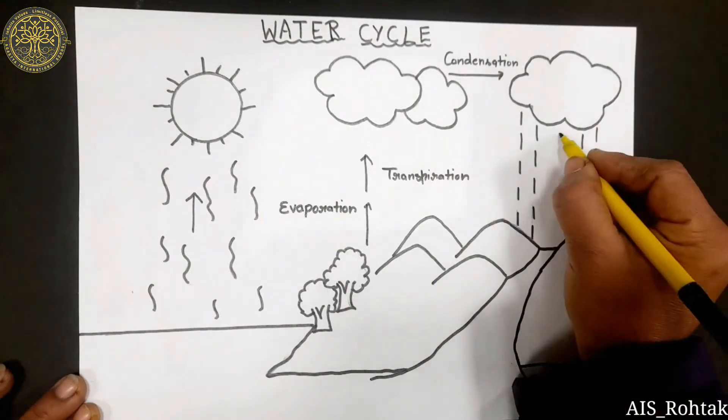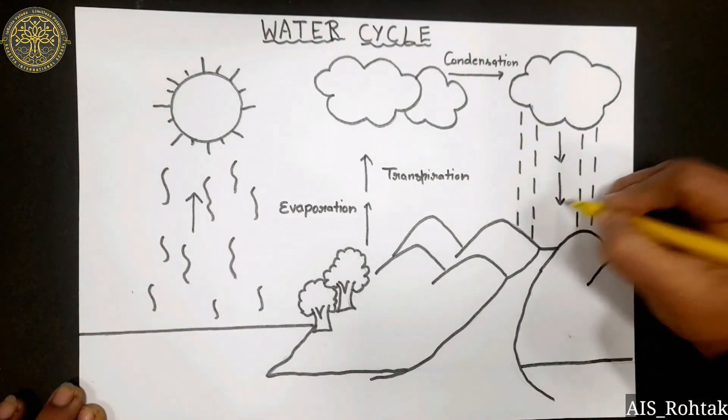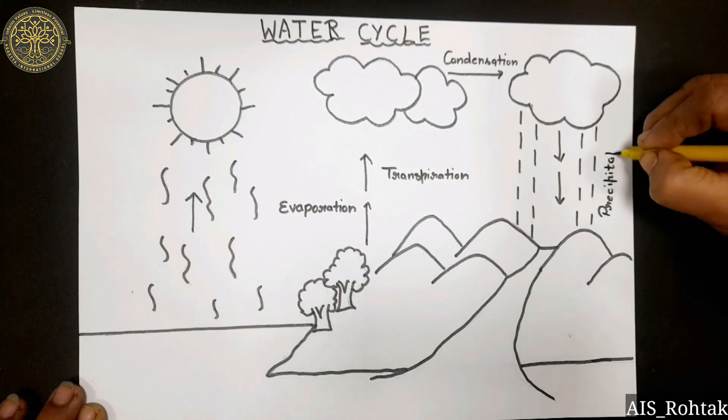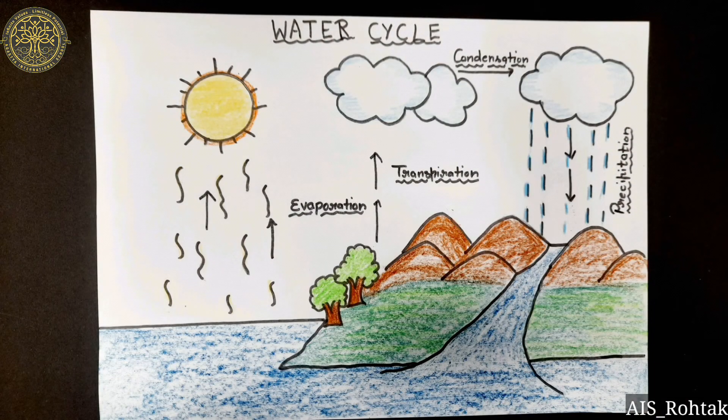After outlining with black sketch pen, color it. Your water cycle drawing is done. Thank you so much.